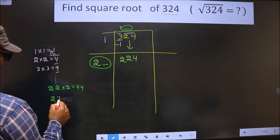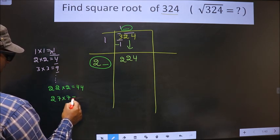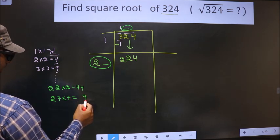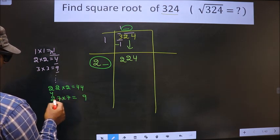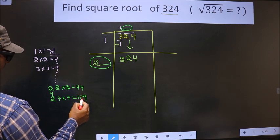If we take 27 into 7, 7 into 7, 49. 7 to 14 plus 4 is 189.